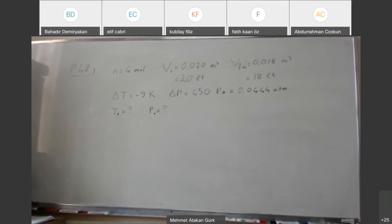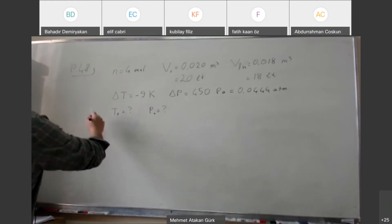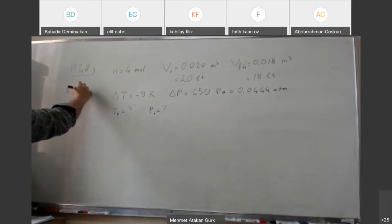This is actually quite similar to the previous question. We are going to need to write the ideal gas law a few times and see if we can come up with a solution to the equations that we obtain. So ideal gas law is just PV equals nRT.